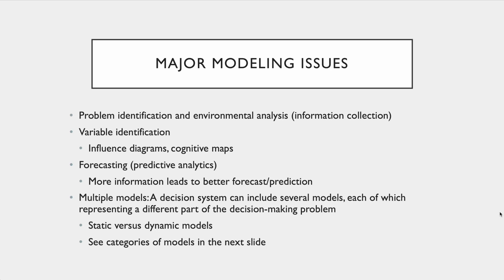Variable identification influences how our diagram or any other mapping we do works. A variable is something that can be changed — the number of items we're going to produce or the optimal cost of an item could be different variables.